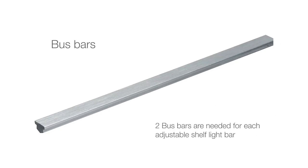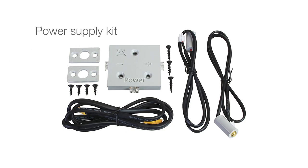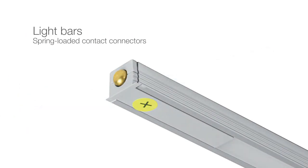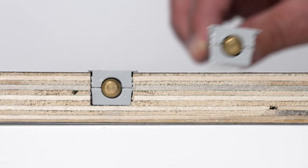The system consists of bus bars. Two bus bars are needed for each adjustable shelf light bar. A power supply kit. Drivers are sold separately and light bars with spring-loaded contact connectors. The light bars are delivered ready to install into a routed shelf channel.